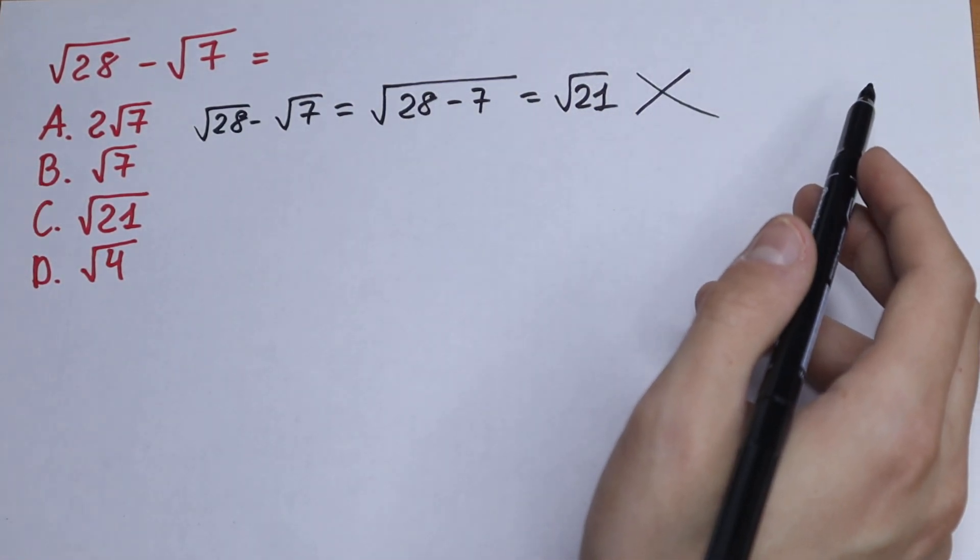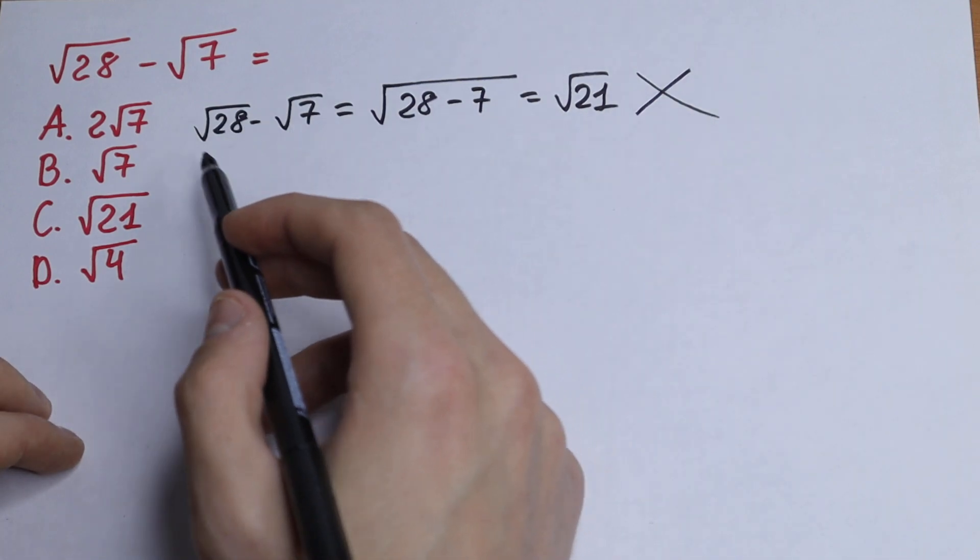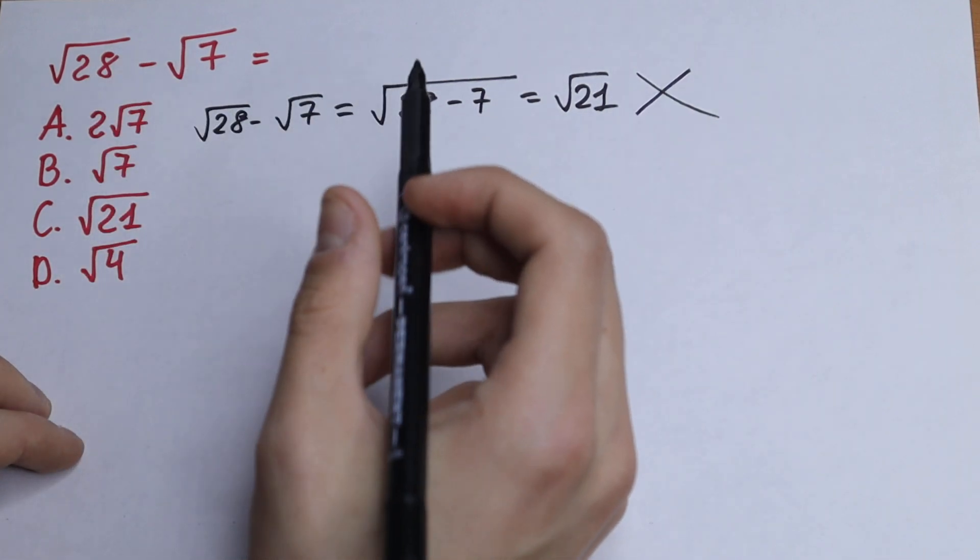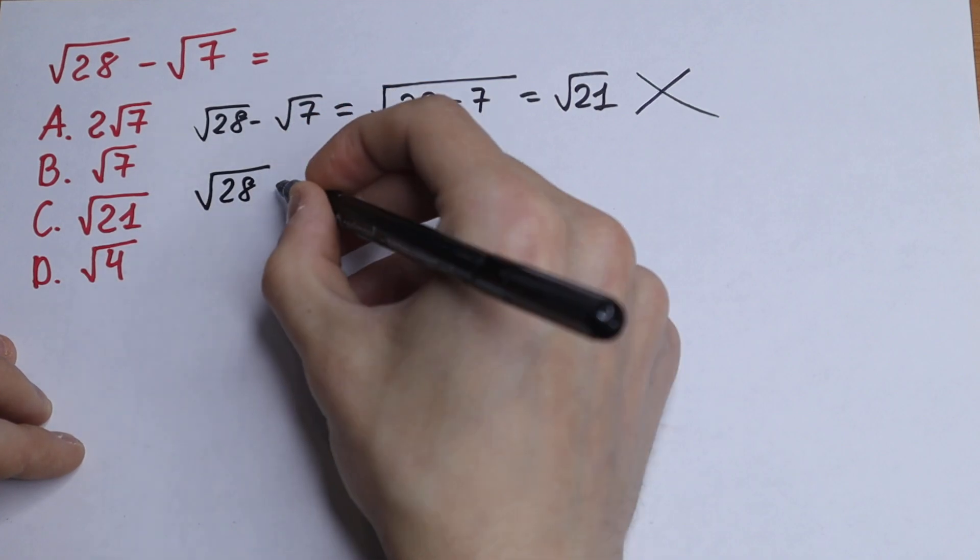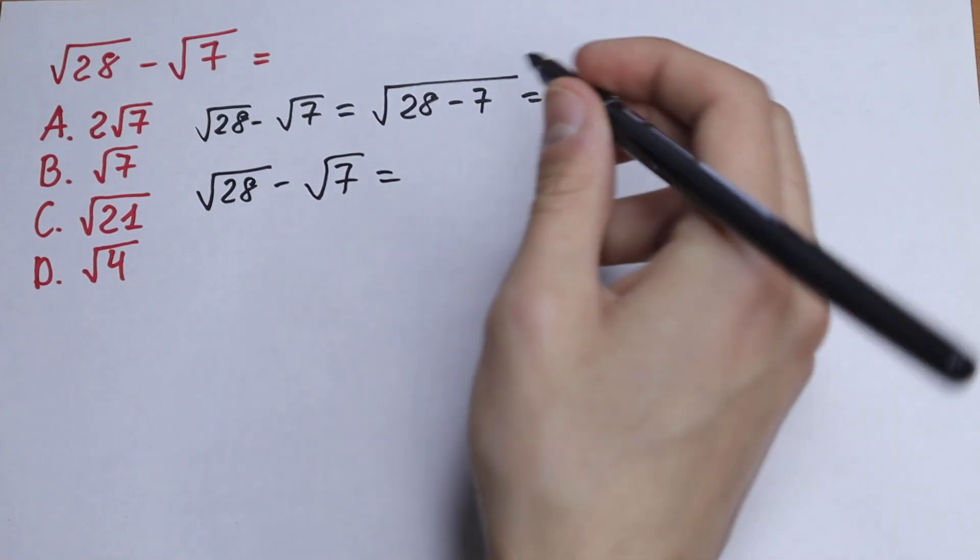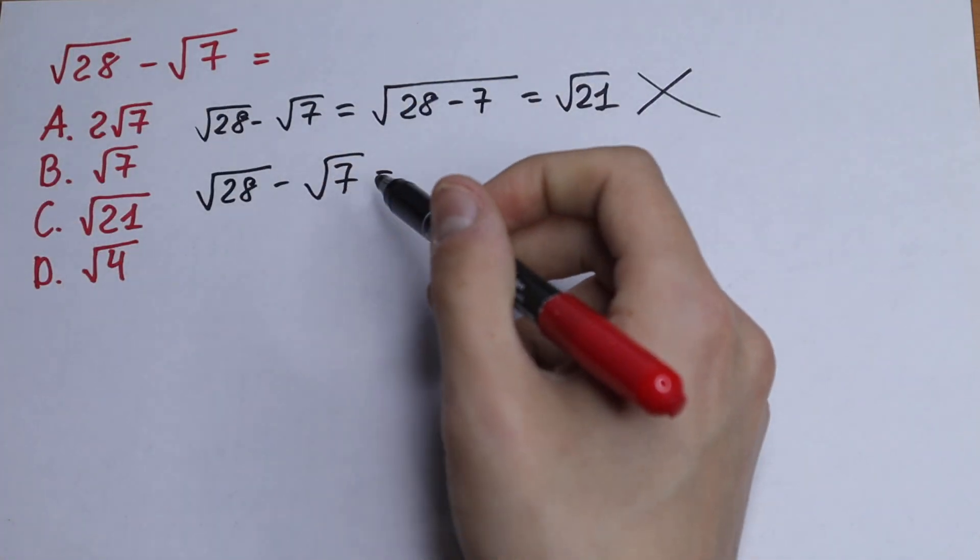So what we're going to do in our way? We have square root of 7 and square root of 28. I write this right here: square root of 28 minus square root of 7. How can we simplify this?